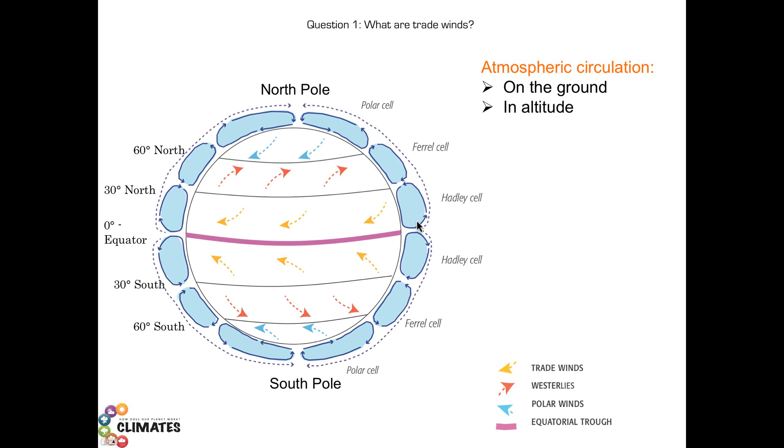The wind descending at a 30 degree latitude can also go to the north. It will form the Ferrel cell while ascending again to the altitude at about 60 degrees. We also have the polar cells.